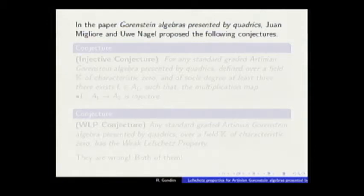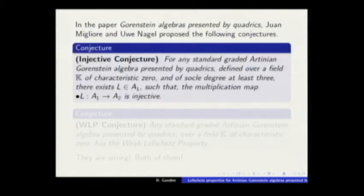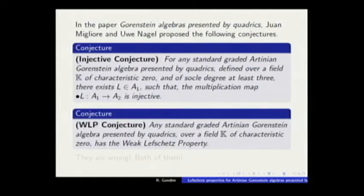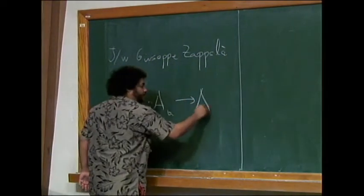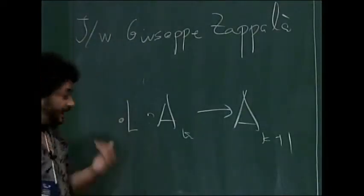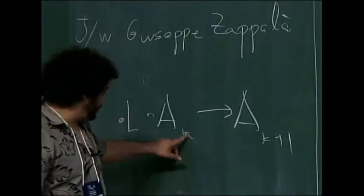In this paper, they studied the Hilbert vector of Gorenstein algebras presented by quadrics and posed two conjectures. The first conjecture states that there exists an element in the first degree such that the first multiplication map is injective.